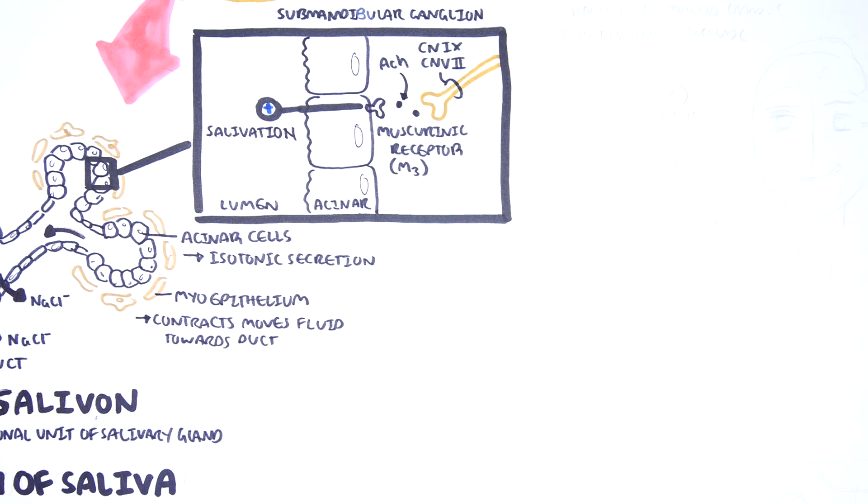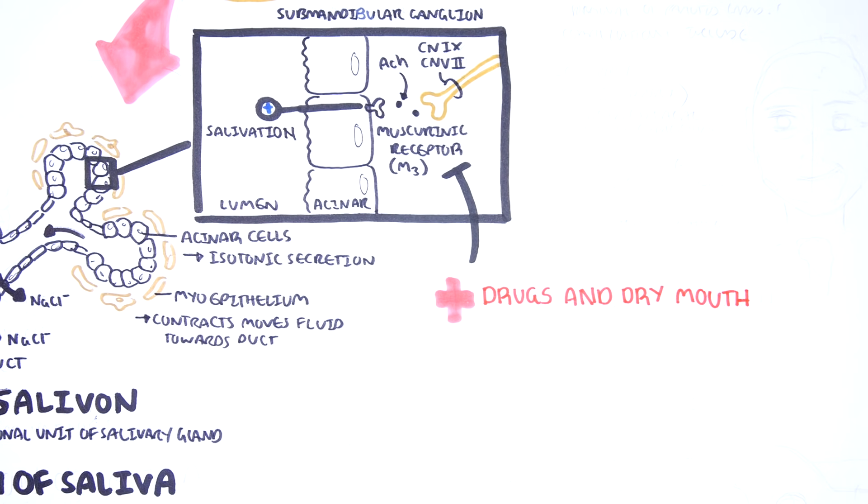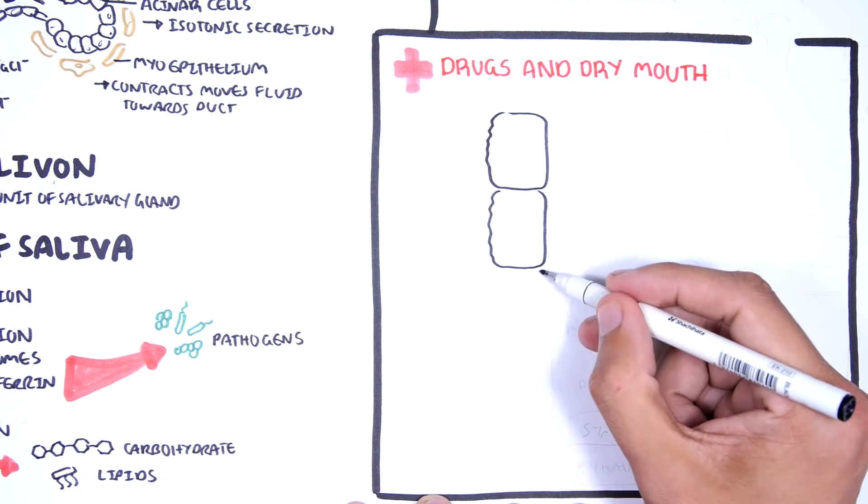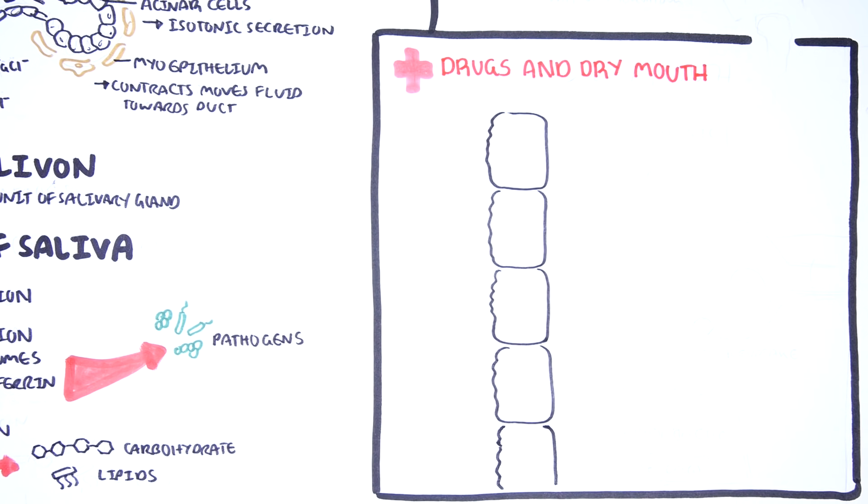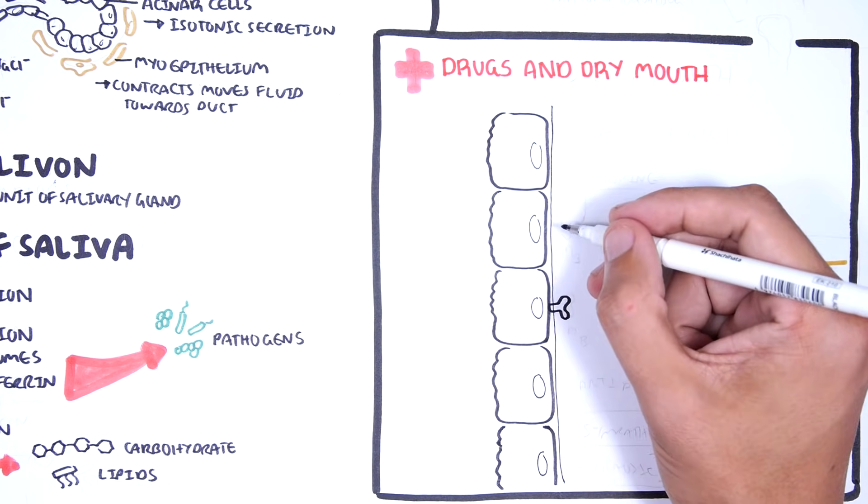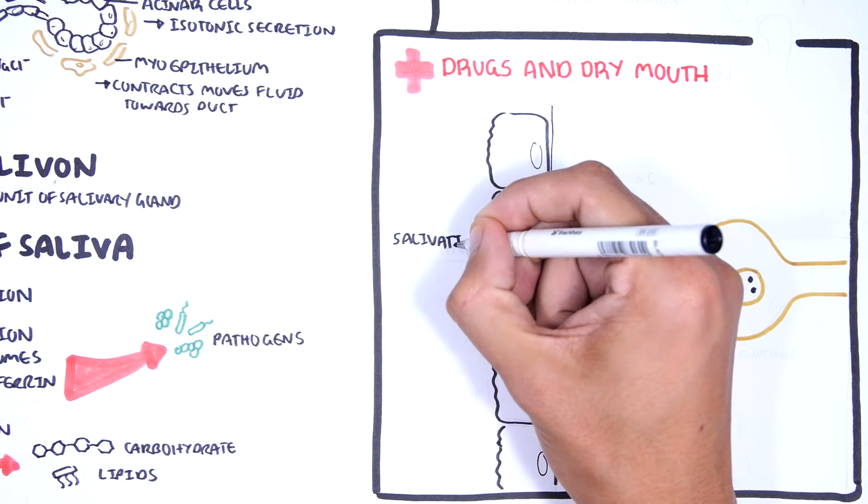Thus, by inhibiting muscarinic receptors or inhibiting this interaction between acetylcholine and the receptor, you can really cause dry mouth. So, clinical pharmacology looking at drugs and dry mouth. Many drugs can cause a dry mouth. Remember, the parasympathetic neuron secretes acetylcholine which binds onto muscarinic receptors on the basal surface of the acinar cells. This causes salivation.